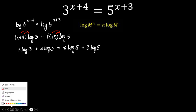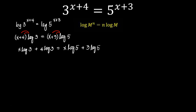And then since what we're solving for is the value of x, we will combine those terms with x on the left side. So that's x·log3 minus x·log5 equals 3·log5 minus 4·log3.